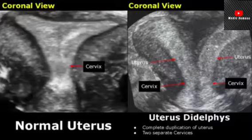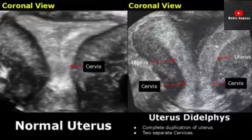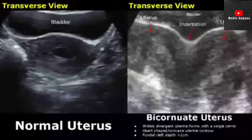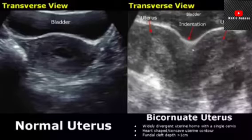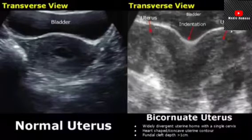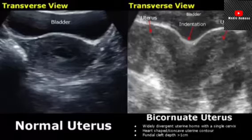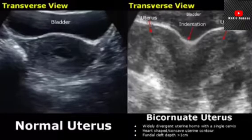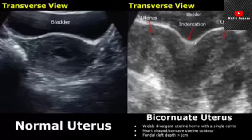In a bicornuate uterus, the uterine horns are widely divergent and there is usually a single cervix. The uterine contour is heart-shaped — either heart-shaped or concave-shaped — with a concave indentation at the fundus.